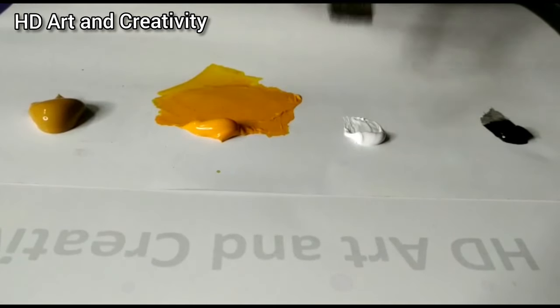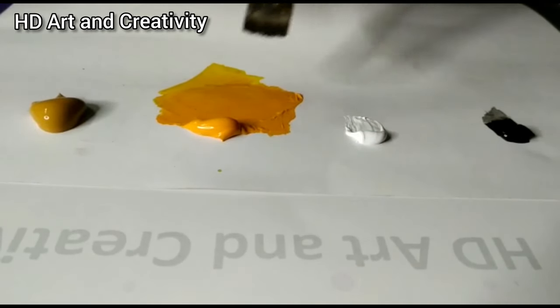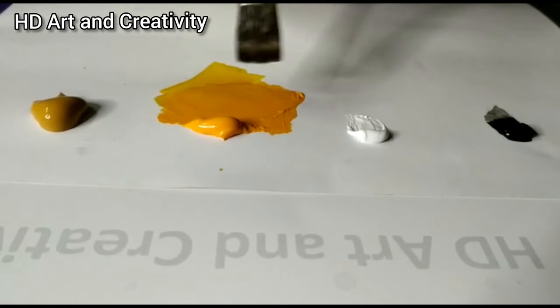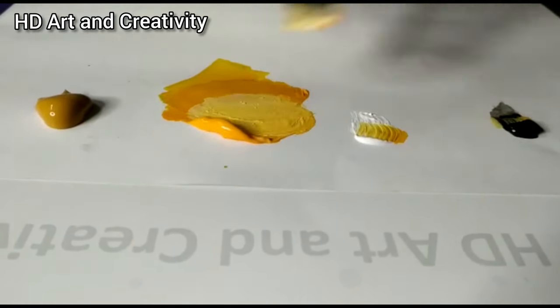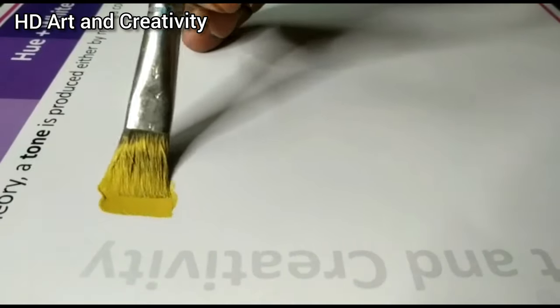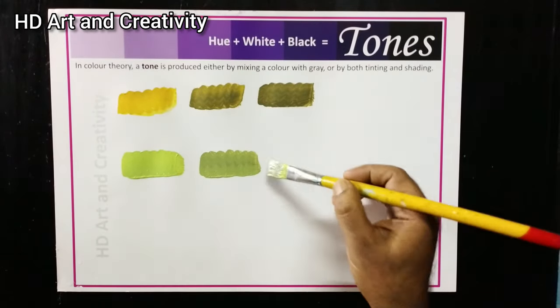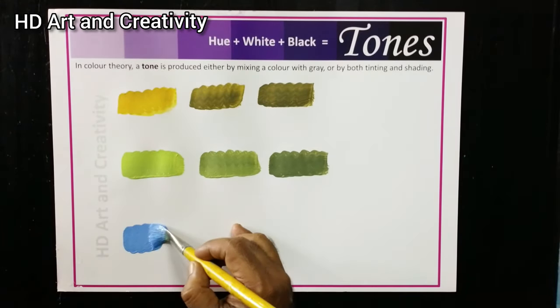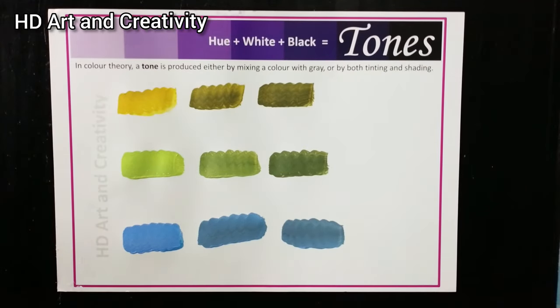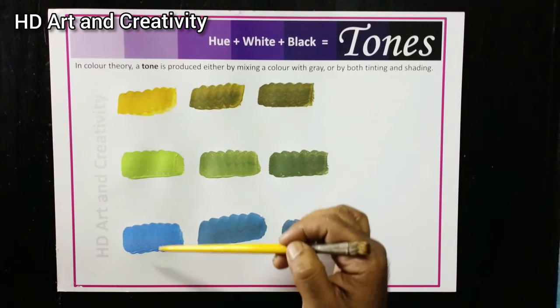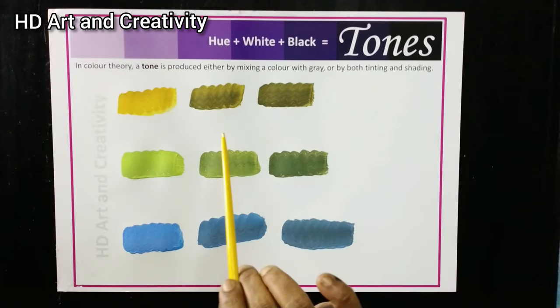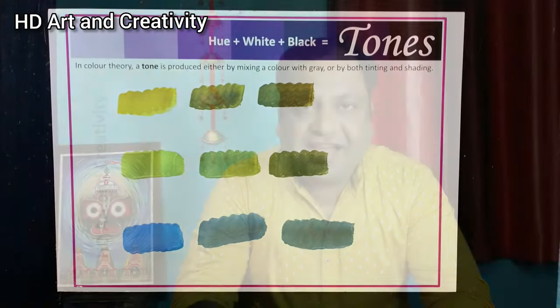Pure color mixed with gray gives us tone. We can see examples of tone. This is pure color — we mixed it with gray. So today we learned what is hue, what is tint, what is shade, and what is tone.